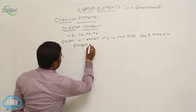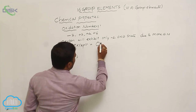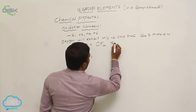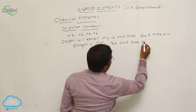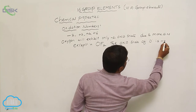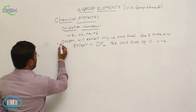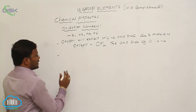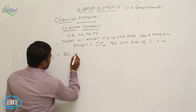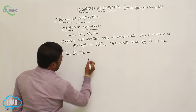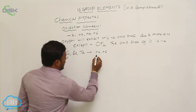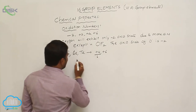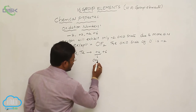Hence, due to high electronegativity, the most commonly exhibited oxidation state of oxygen is -2. An exception is OF₂ (oxygen difluoride), where the oxidation state of oxygen is not -2 — this is a rare condition. The remaining elements — sulfur, selenium, and tellurium — will exhibit +4 and +6 oxidation states. The +4 oxidation state is achieved by reacting these elements with oxygen to form their oxides.